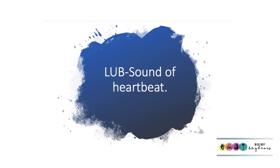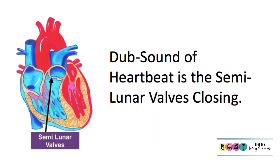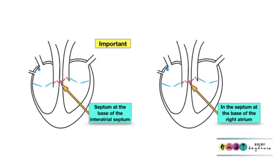This creates the lub sound of the heartbeat. The dub sound of the heartbeat — lub-dub — is the semilunar valves closing after the ventricles have relaxed. And so completes one cardiac cycle.